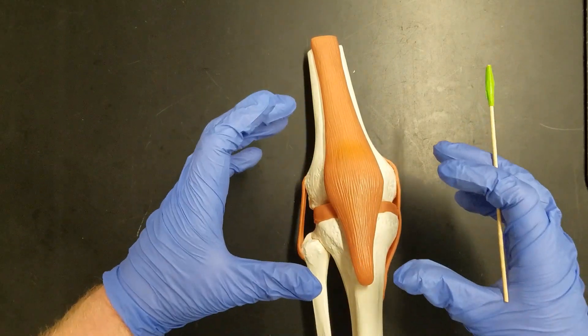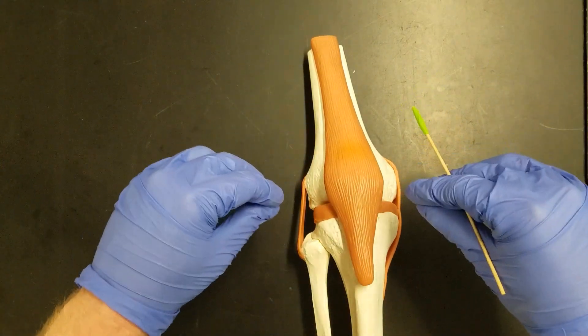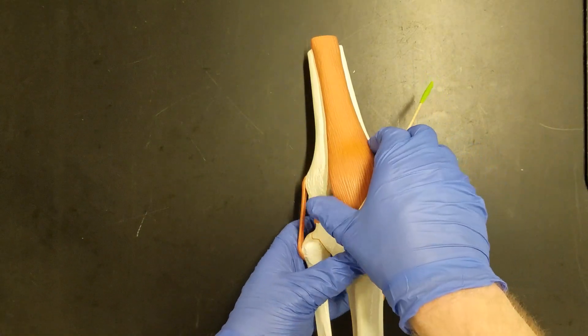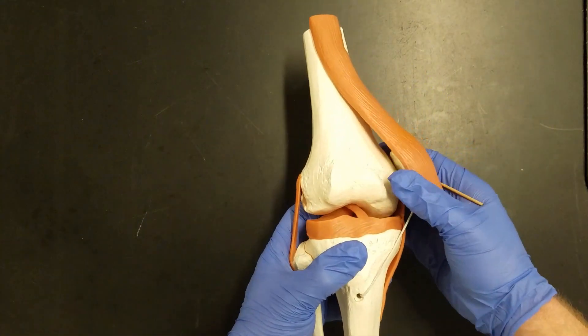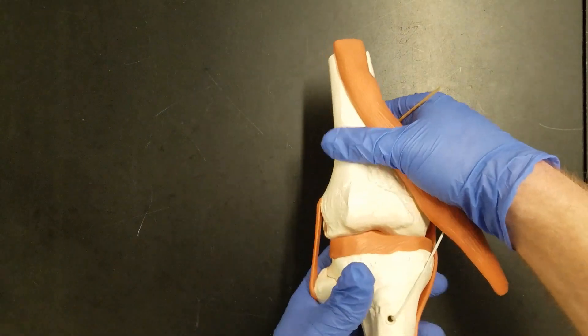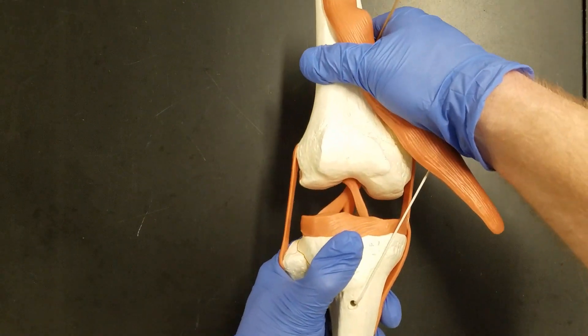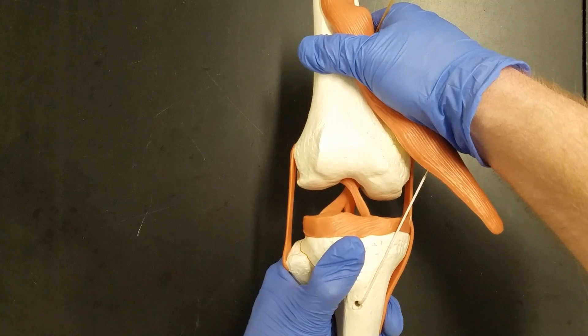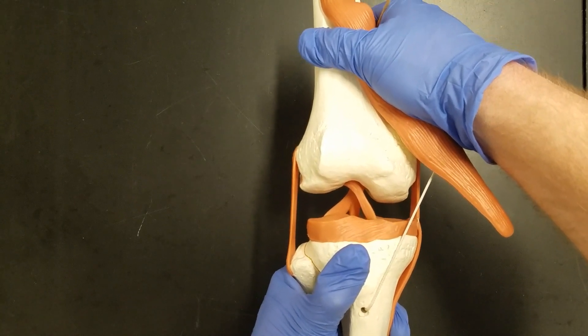In order to see the ligaments that are inside of the knee we need to move the patella out of the way. So we're going to push it over to the side and I'm going to stretch these two bones apart, and as I do that you should see the cross or X that's forming in the middle.